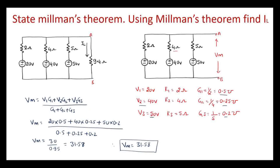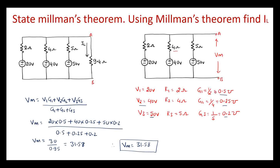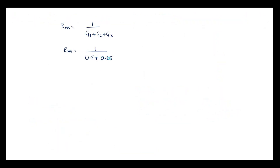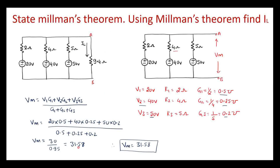Now let me find Millman's resistance Rm. Rm = 1 / (G1 + G2 + G3) = 1 / (0.5 + 0.25 + 0.2) = 1 / 0.95 = 1.052 ohm. Now let me draw the Millman's equivalent circuit. It consists of Rm = 1.052 ohm in series with Vm = 31.58 V.